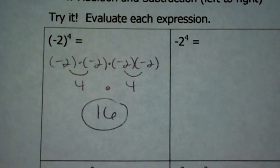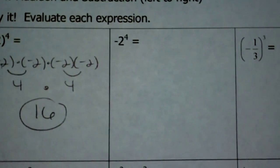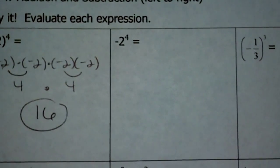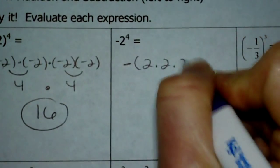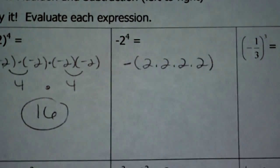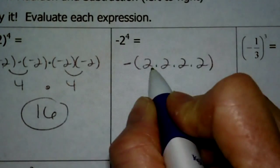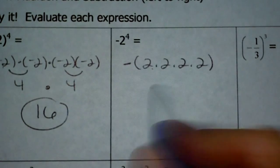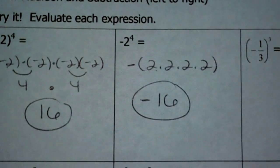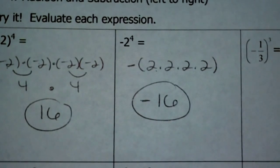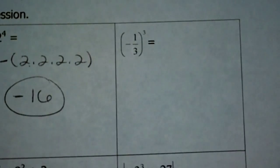Next one — you might think this is the exact same thing, but it's not. This base is not in parentheses. This means the opposite of whatever 2 times 2 times 2 times 2 is. So the result of this one is always going to be negative no matter what. We know that 2 times 2 times 2 times 2 is 16, but this time it's going to be a negative 16. If you have a negative base that is not in parentheses, the result of that expression is always going to be negative.